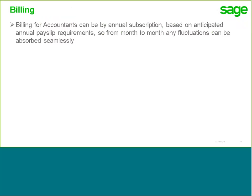Now, with regards to the billing, we have a couple of different models around the billing for accountants, so it is quite flexible. The best option is an annual subscription, where you roughly work out how many you will need over the course of a year and purchase a bundle. This helps with businesses where they have fluctuations on the number of payslips, where some months they will have a higher requirement and some months a lower requirement. With the annual subscription, it doesn't matter if you use more in one month and less in another, as long as you are within your annual total.